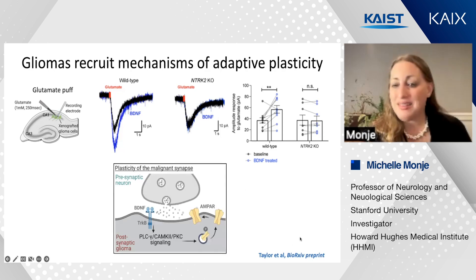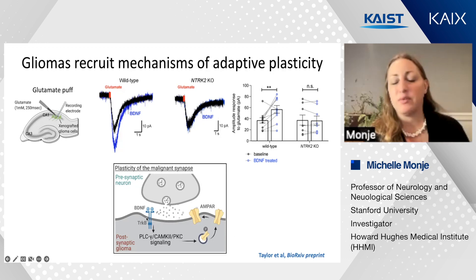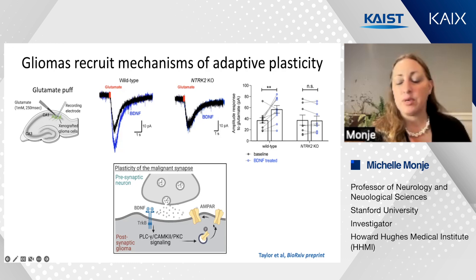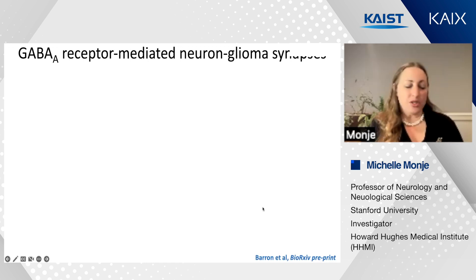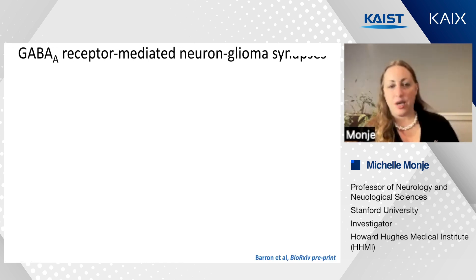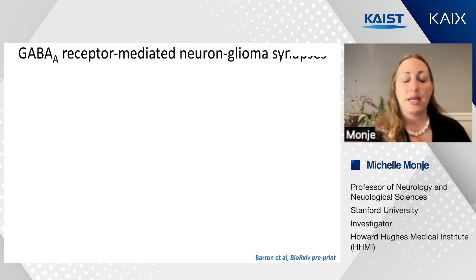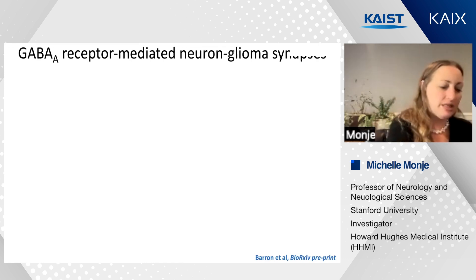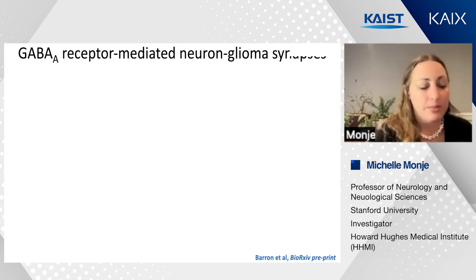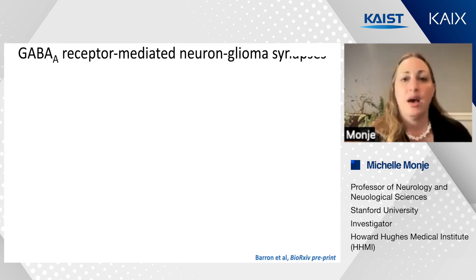Summarizing a lot of work available in a bioRxiv preprint right now, we find that this is mediated through a postsynaptic mechanism of adaptive plasticity by which BDNF/TrkB signaling in the tumor cell increases AMPA receptor trafficking to the postsynaptic membrane. We then wondered if there were other kinds of synapses occurring in glioma cells. The AMPA receptor-mediated synapses we identified were found in both pediatric gliomas as well as in adult hemispheric gliomas—a group in Germany led by Frank Winkler similarly found these neuron-to-glioma AMPA receptor-mediated synapses in adult glioblastoma.